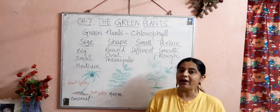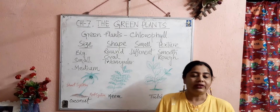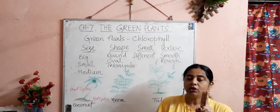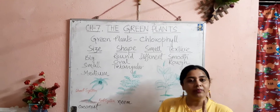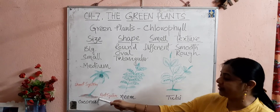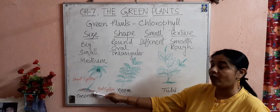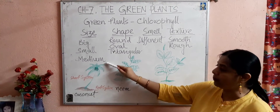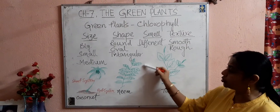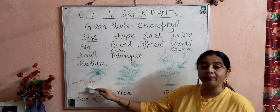All of you see green plants around yourselves. Children, all of you know that plants are living things. Plants have two systems. The first one is the root system and the second one is the shoot system. The part of the plant which is present under the soil is known as the root system, and the part of the plant which is present above the soil and grows towards the light is known as the shoot system.